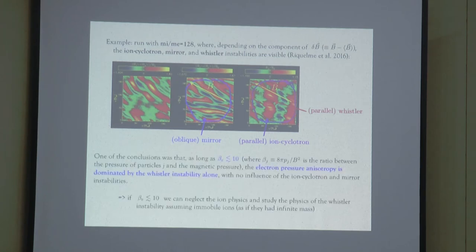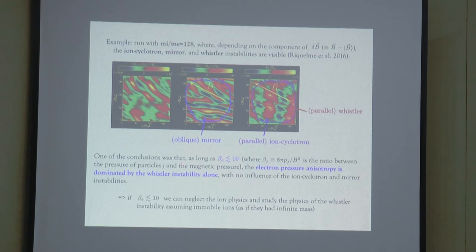What we found in our previous work was that when the electron beta — defined as the ratio between their pressure and their magnetic pressure — is smaller than 10, the anisotropy of the electrons is completely dominated by the Whistler instability. That means we don't need to worry about the ions when studying possible electron acceleration, and we can run simulations where the ion dynamics are completely ignored.